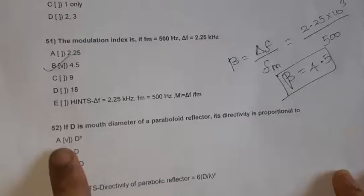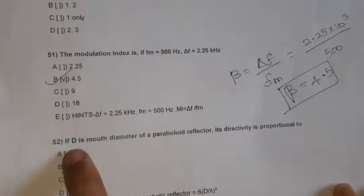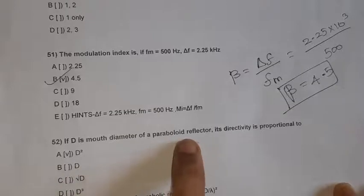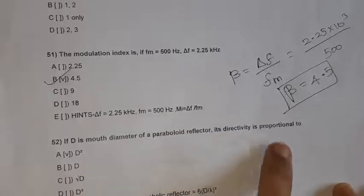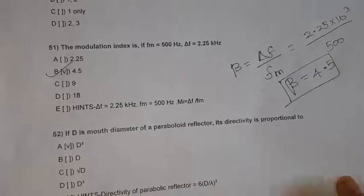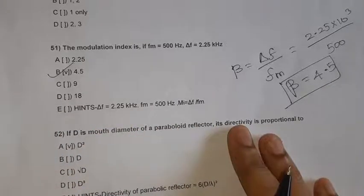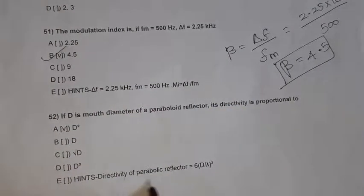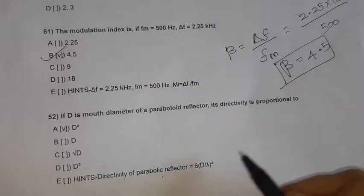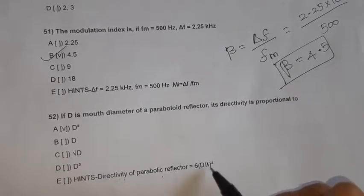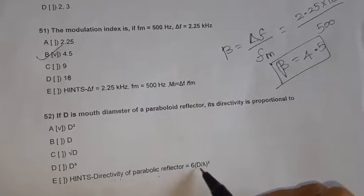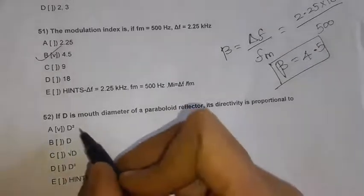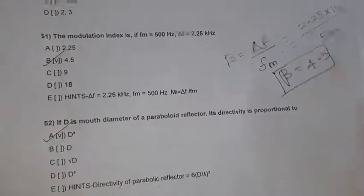Question 52: If D is the mouth diameter of a paraboloid reflector, its directivity is proportional to what? The directivity of a parabolic reflector is 6 into (D/lambda) squared. So it is proportional to D squared. Option A, D squared, is the right option.